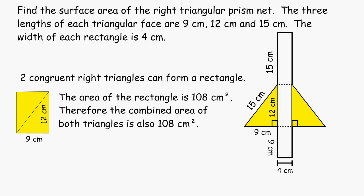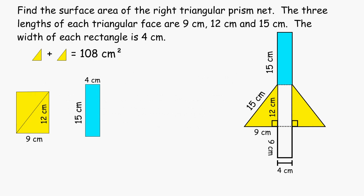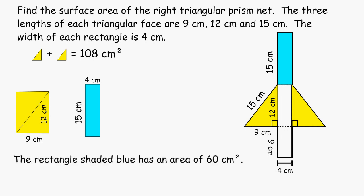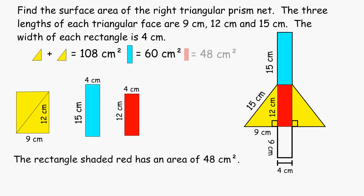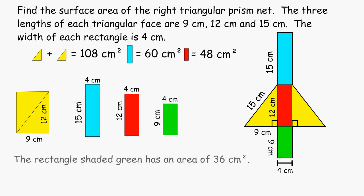A rectangle with dimensions 9 by 12 will produce an area of 108 square centimeters. Now that we know the area of both triangular faces, let's find the area of the rectangle located at the top. The length and width of that rectangle are 4 and 15, producing an area of 60 square centimeters. The length and width of the middle rectangle are 4 and 12, producing an area of 48 square centimeters. The length and width of the bottom rectangle are 4 and 9, producing an area of 36 square centimeters.